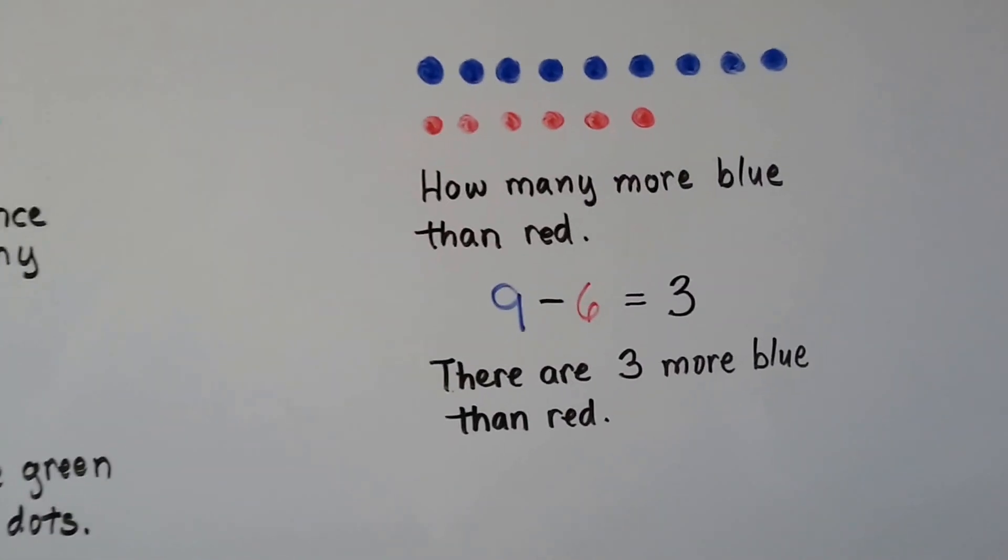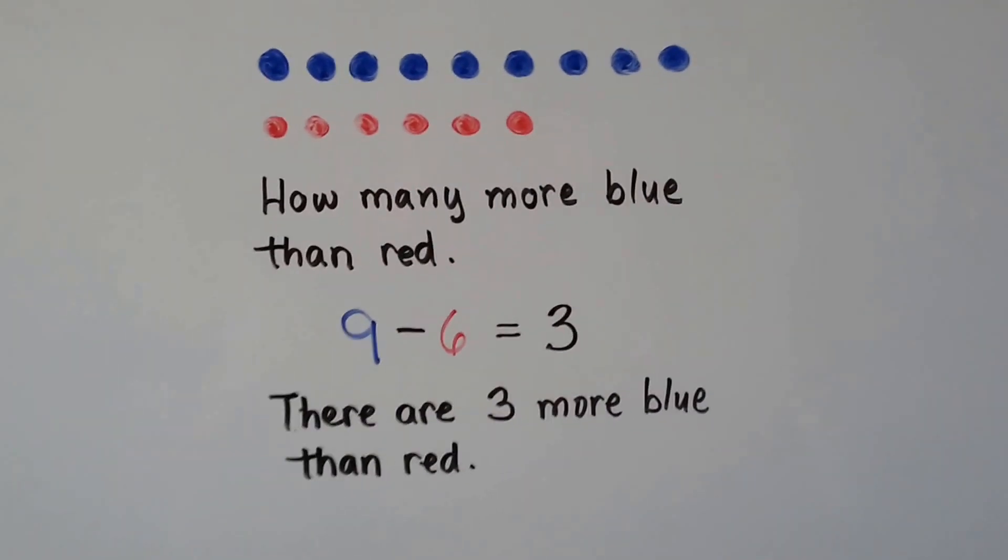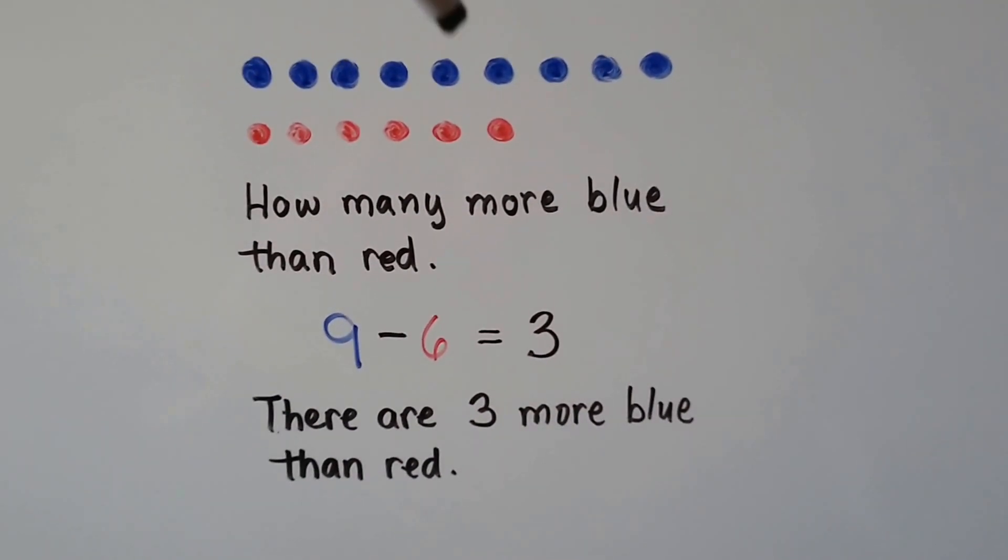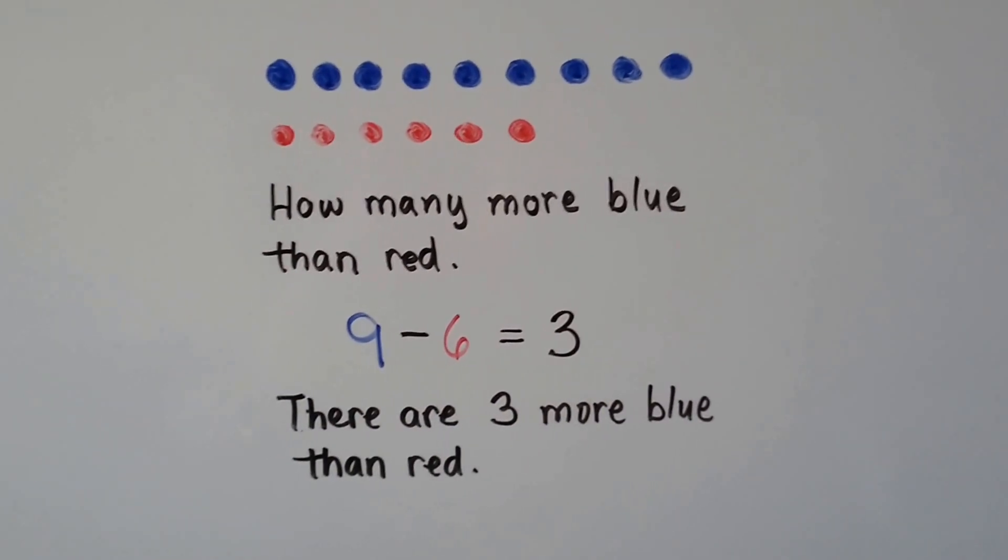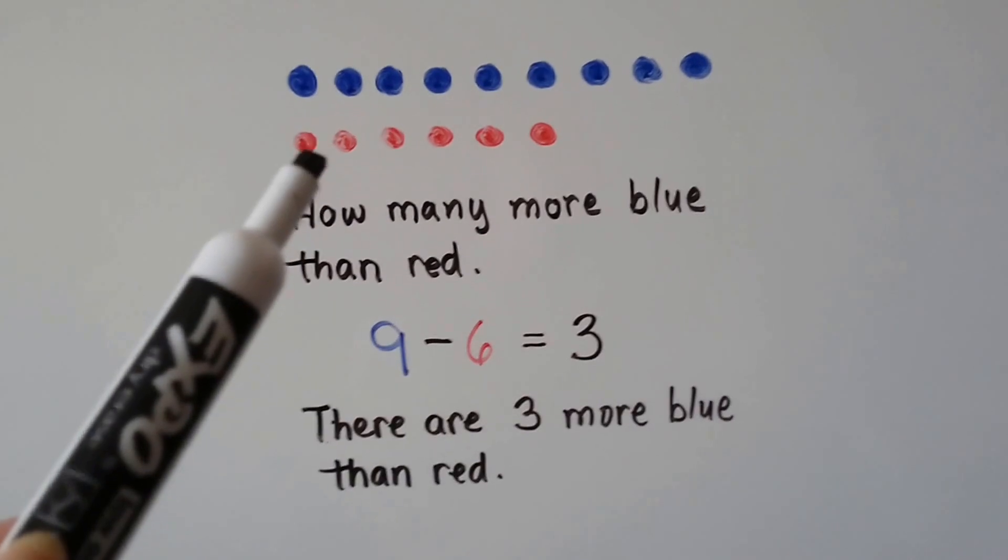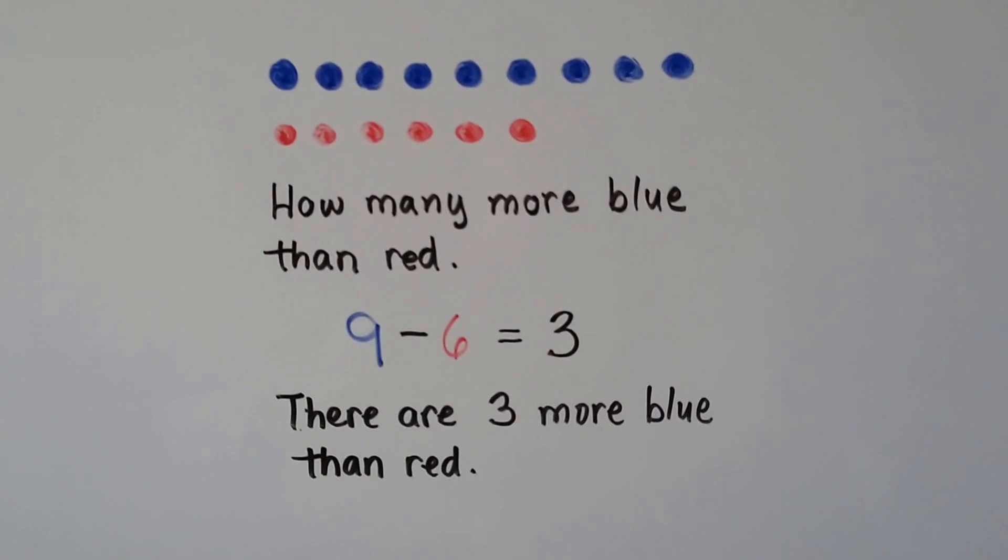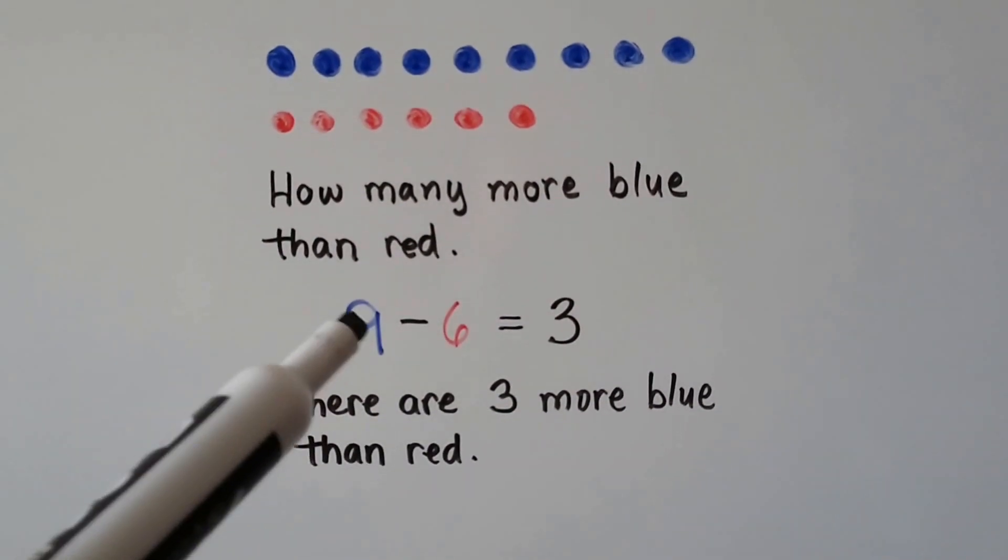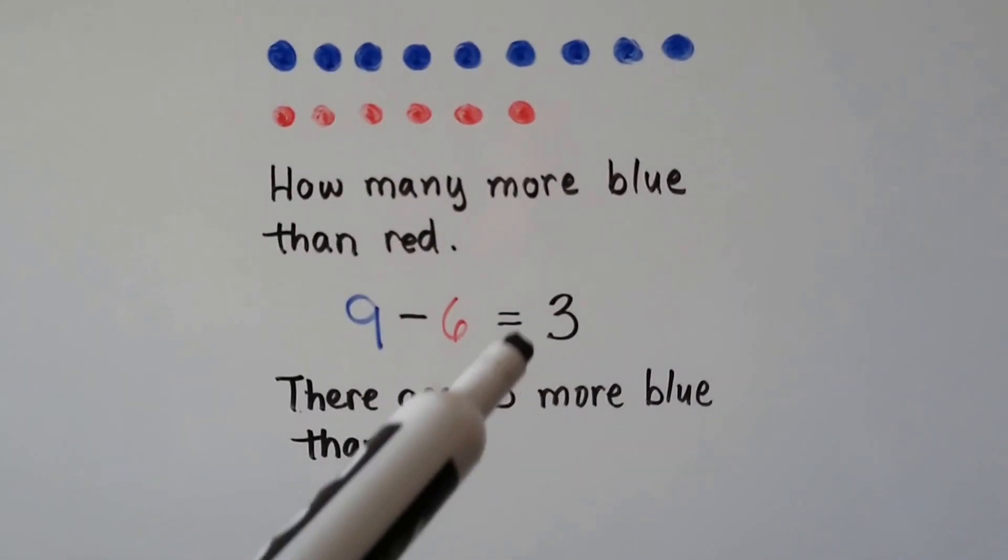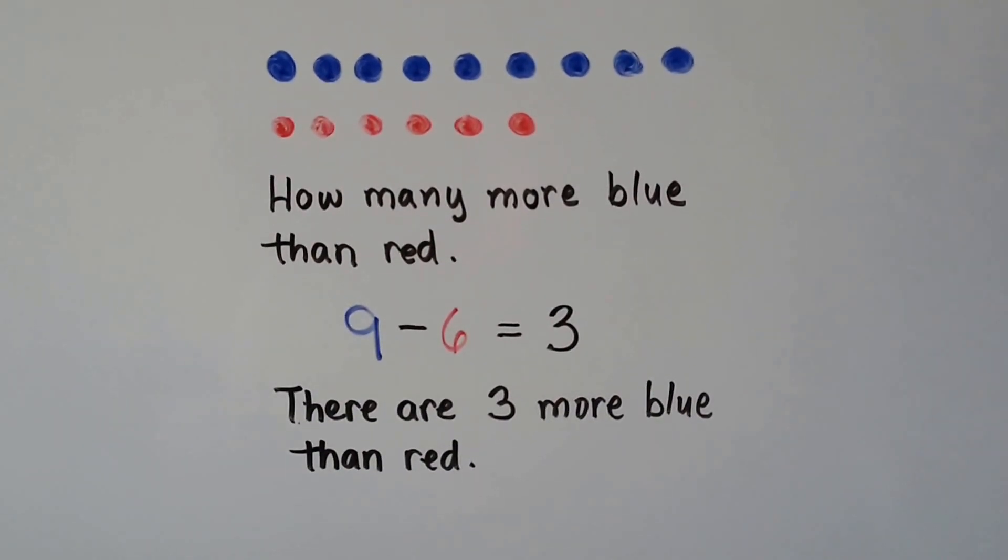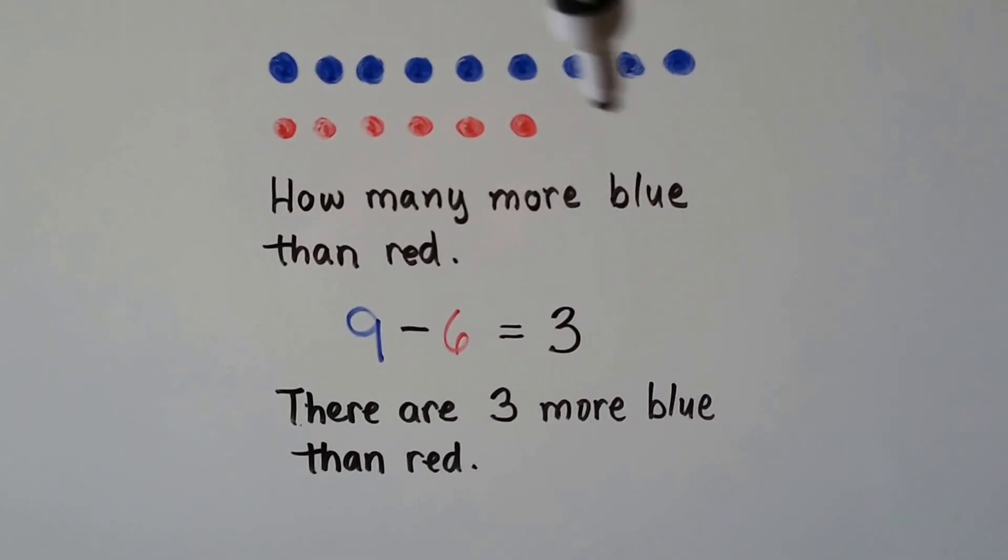How many more blue than red? We count the blue ones: 1, 2, 3, 4, 5, 6, 7, 8, 9. We count the red ones: 1, 2, 3, 4, 5, 6. And we can write our subtraction sentence: 9 minus 6 equals 3. There are 3 more blue than red, and we can see them sticking out here, can't we?